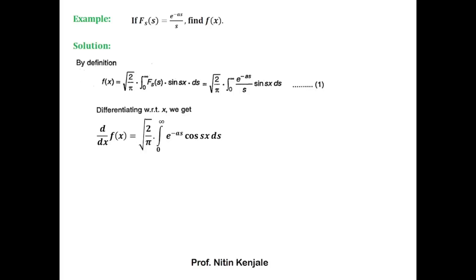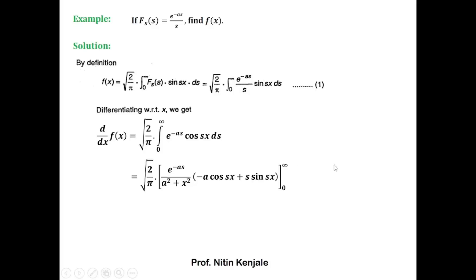We evaluate this integral using the formula for ∫e^(ax) cos(bx) dx. We have ∫e^(-as) cos(sx) ds = e^(-as)/(a² + x²) × (−a cos(sx) + s sin(sx)), evaluated from 0 to ∞. When we substitute s = ∞, e^(-∞) = 0, so that term vanishes. Substituting the lower limit s = 0 gives e^0 = 1, and cos(0) = 1, sin(0) = 0, so we get −(−a)/(a² + x²). After simplifying, f'(x) = root(2/π) × a/(a² + x²).